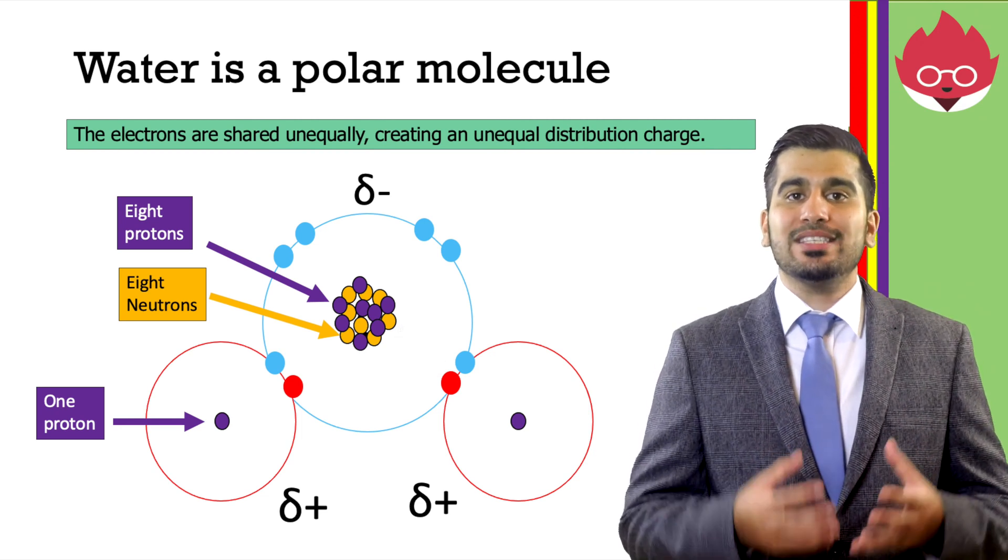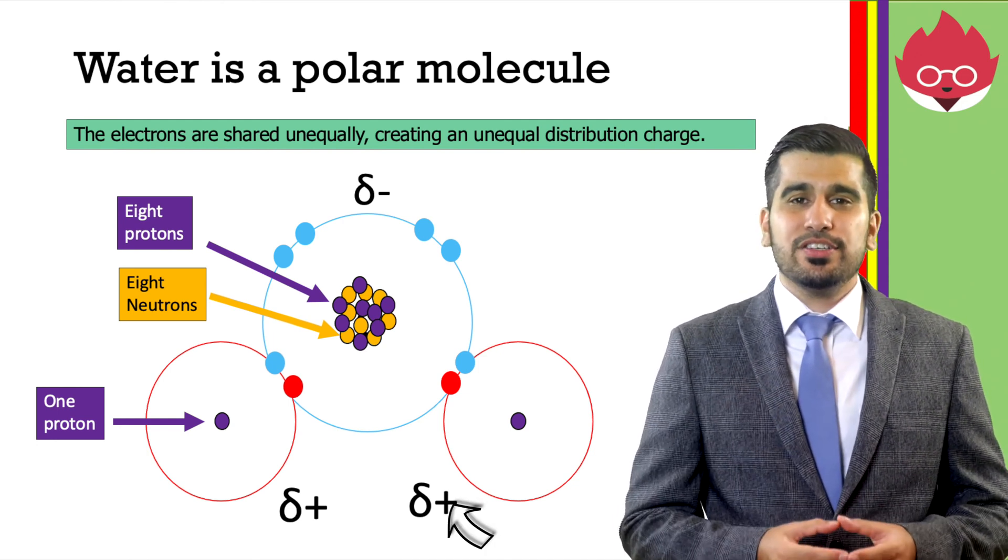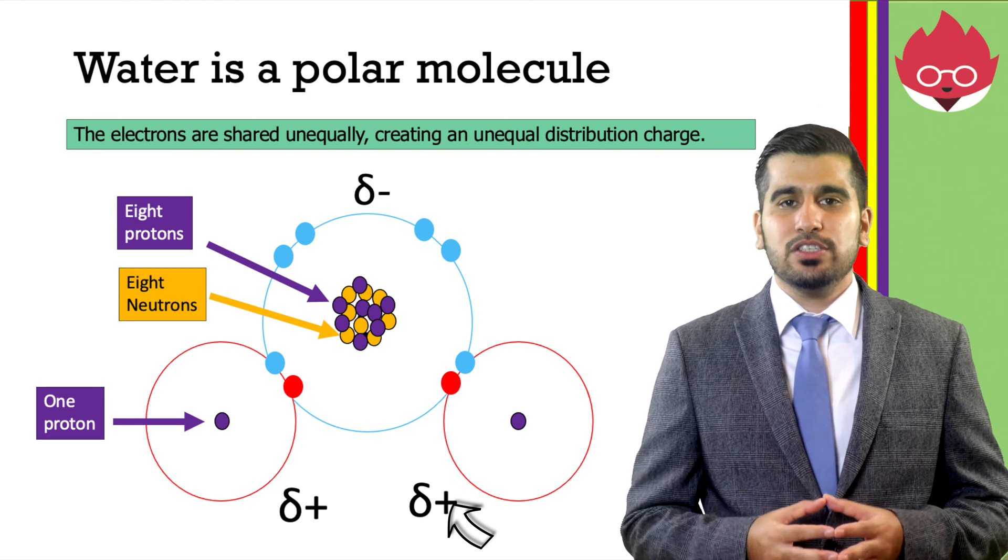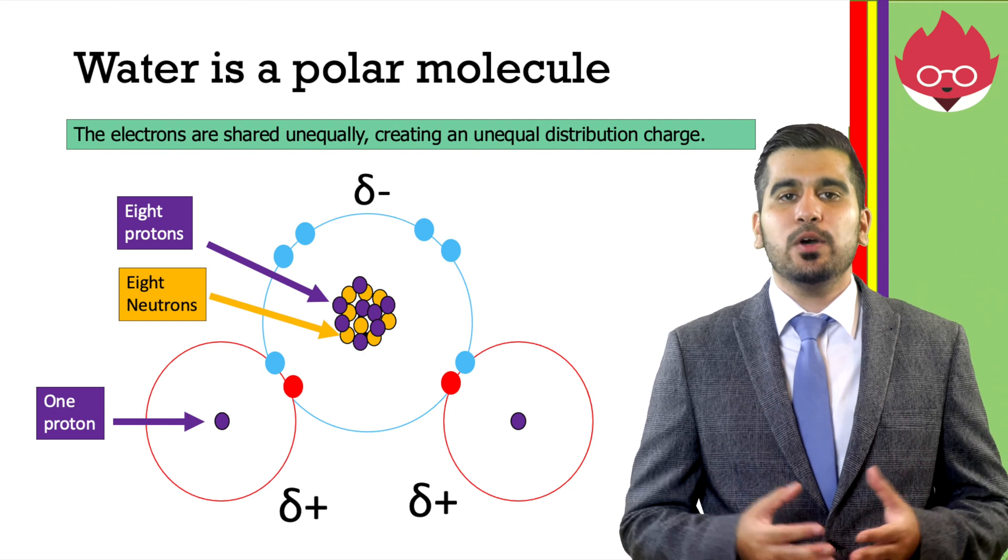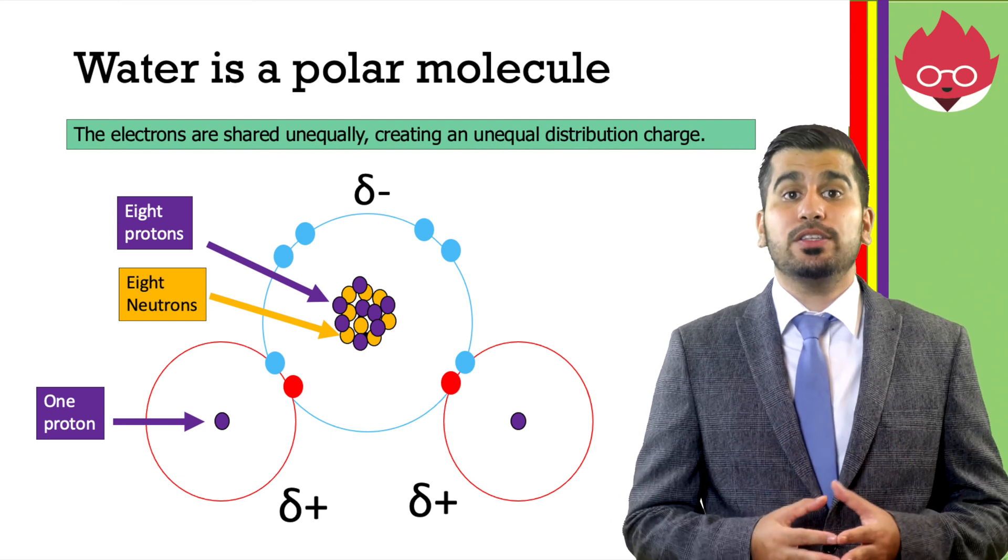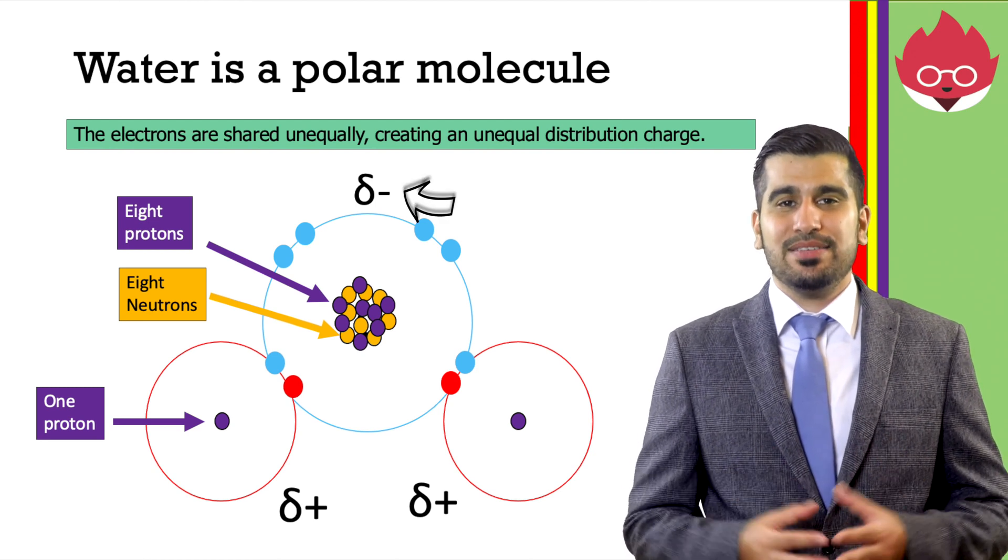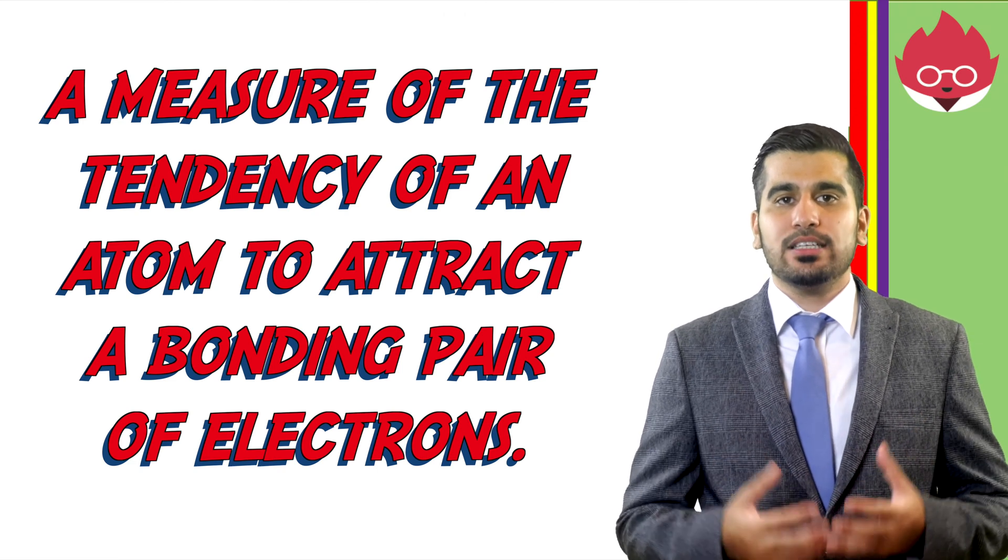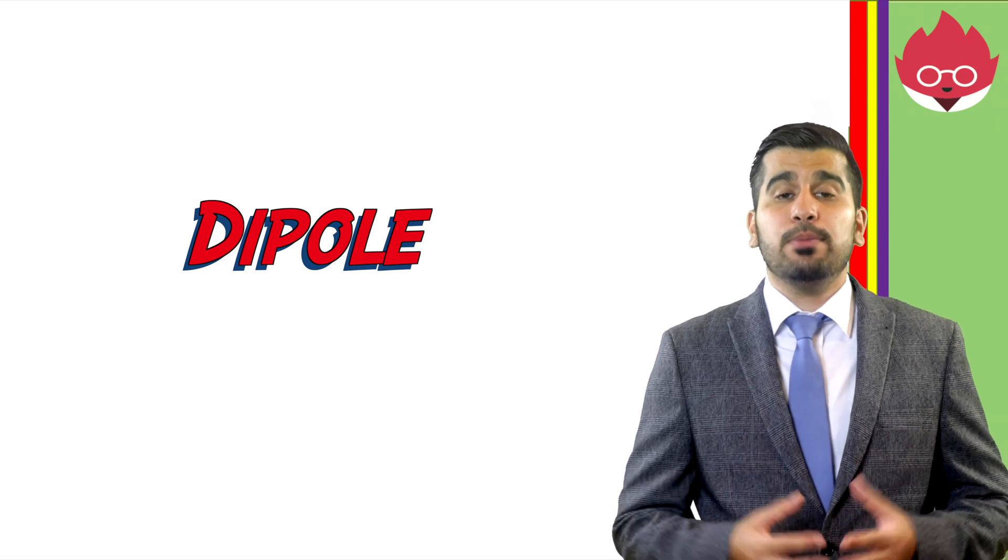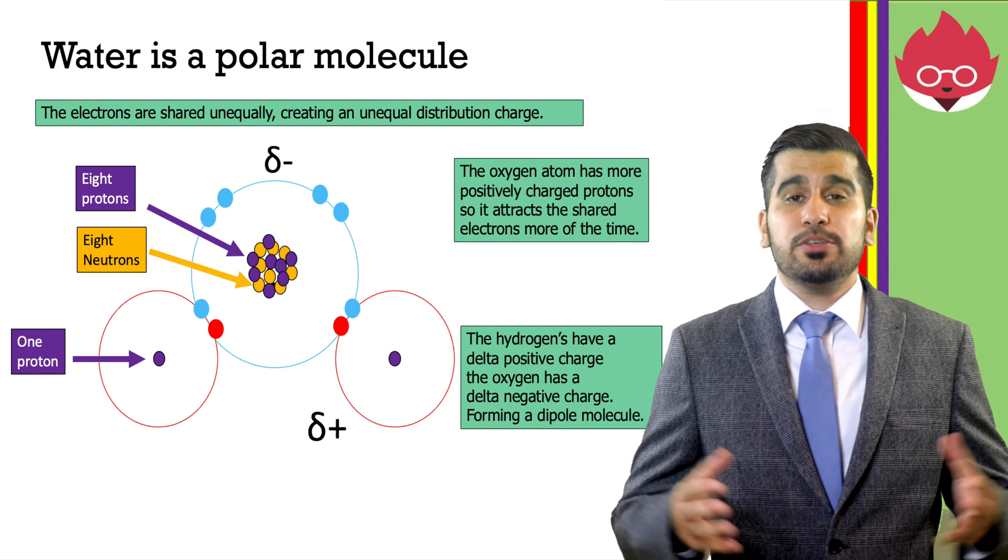We represent the difference in charge across the atom using the term delta positive and delta negative. The hydrogens have a delta positive charge because they are less electronegative, losing charge as the electrons in the covalent bond are more attracted to the oxygen atom, which is more electronegative and given the delta negative sign. Electronegativity is a measure of the tendency of an atom to attract a bonding pair of electrons. This electronegativity forms a dipole molecule, which is an unequal distribution of charge.